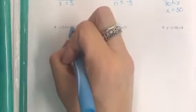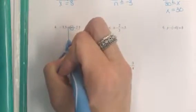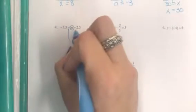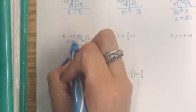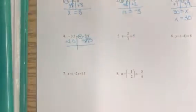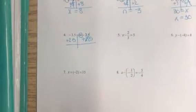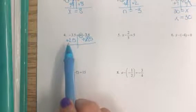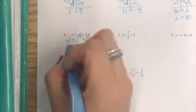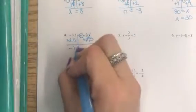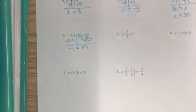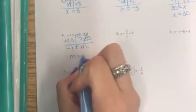Number four, our variable is m. So we're going to undo subtracting 2.5 by adding 2.5. Our 2.5s cancel. Negative 3.5 plus 2.5, you could use a calculator if you need to, but you'll get negative one. And then over here we have the m left so we'll have m equals negative one.